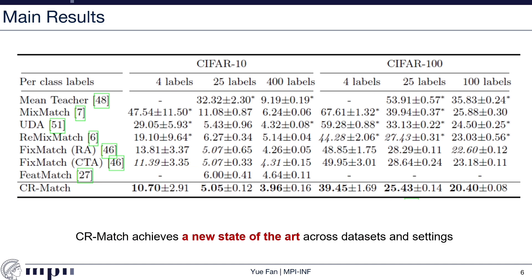Next, I'll show the main results of CRMatch on CIFAR-10 and CIFAR-100 with different numbers of labeled data. For example, on CIFAR-100, we have 4, 25, and 100 labels per class cases. This table compares the error rate between different methods; results are averaged over 5 rounds of different data splits. Our CRMatch achieves a new state of the art across datasets and settings. For example, on CIFAR-100 with 4 labels per class, we outperformed the previous state of the art by 4.8%.